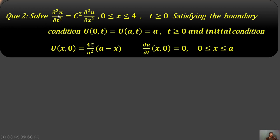The example: solve ∂²u/∂t² = c²·∂²u/∂x². Some conditions are given — the domain for x goes from 0 to a, so x takes values 0, 1, 2, 3, up to a. The value of t is always greater than or equal to zero.